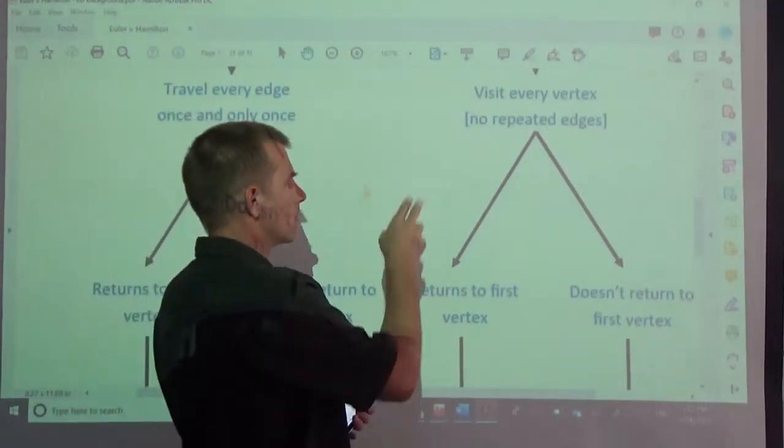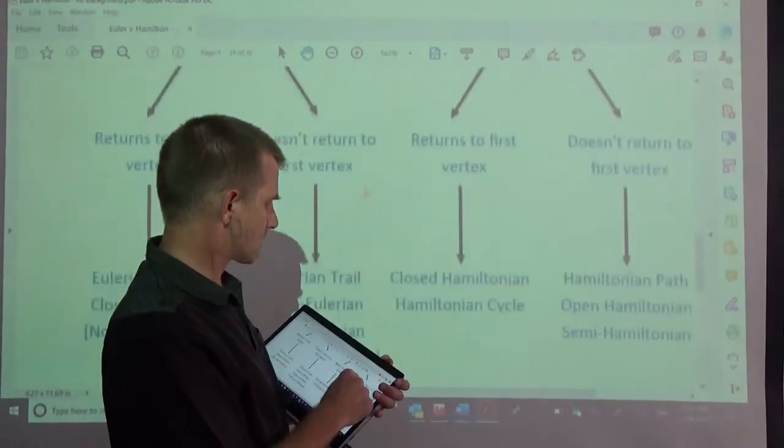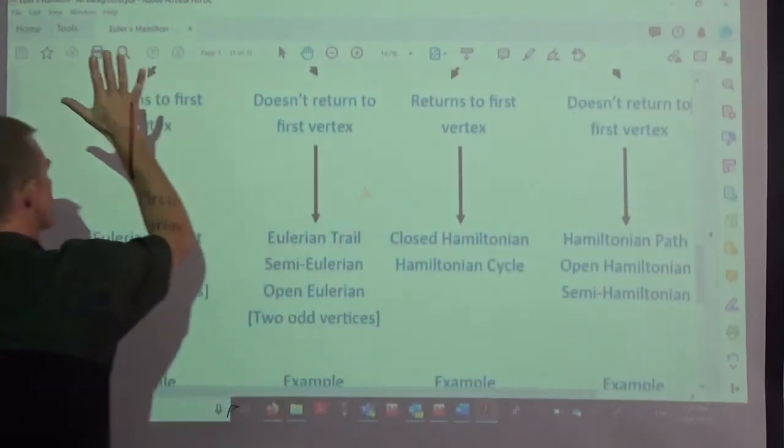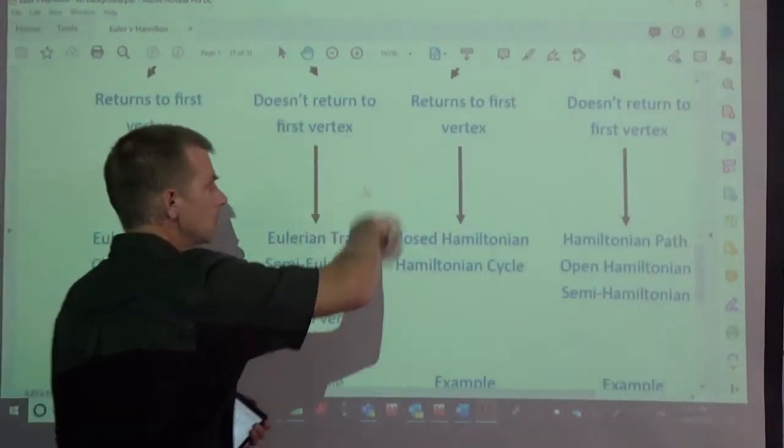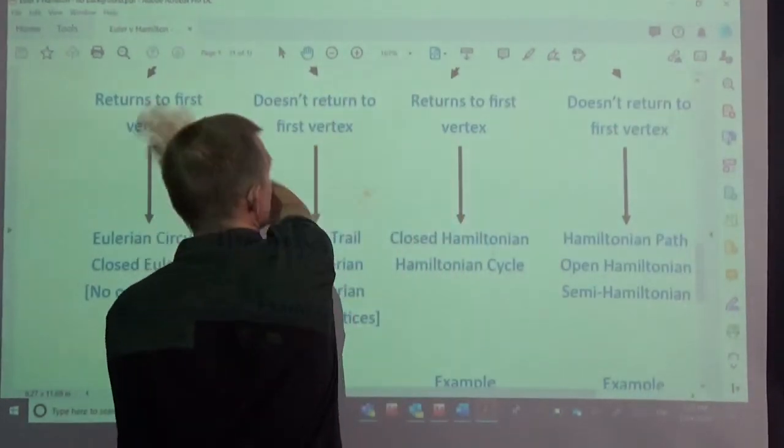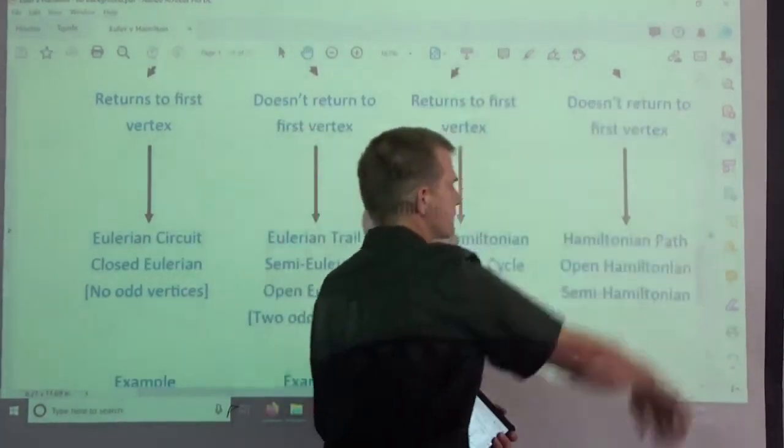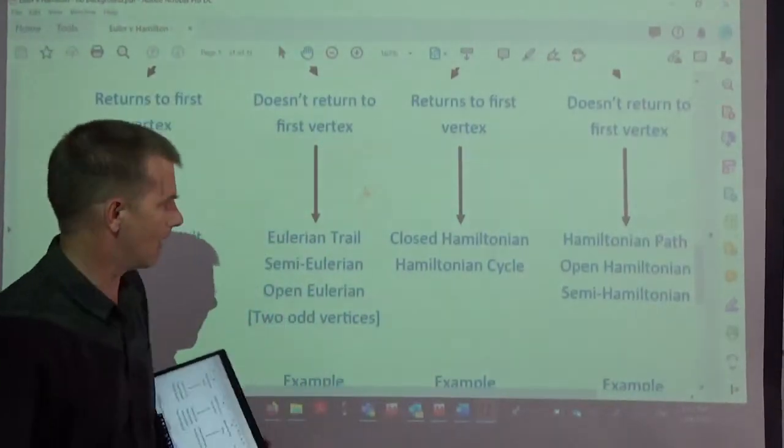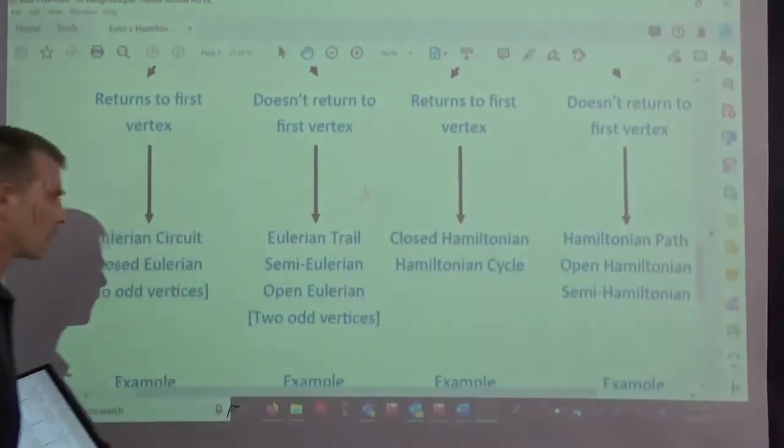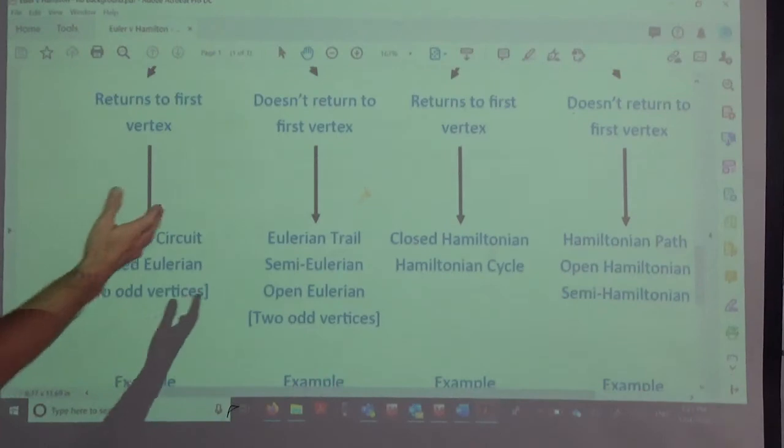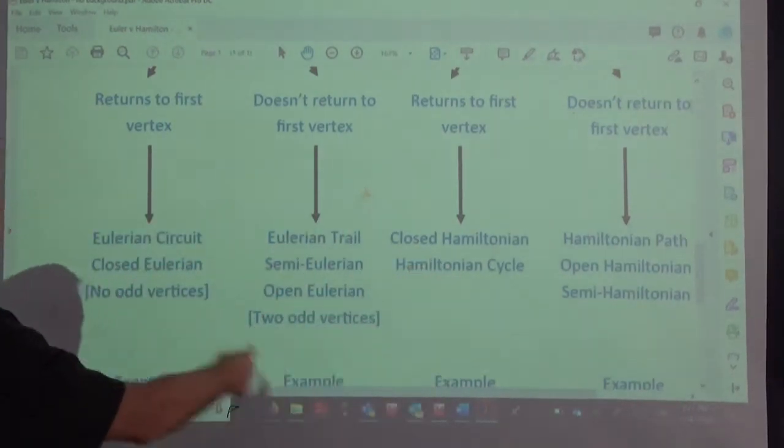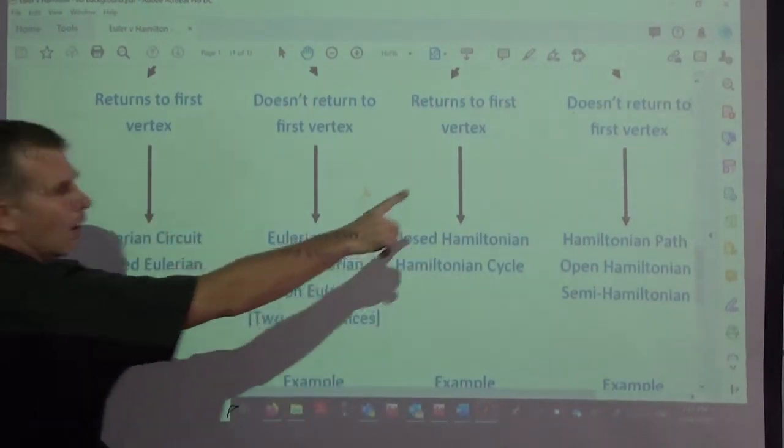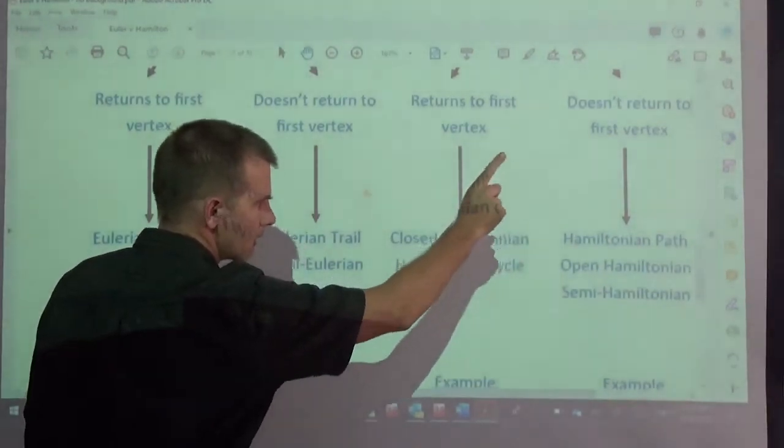Do we visit every vertex? Now key: no repeated edges. You cannot repeat an edge when you're doing this. You can't repeat an edge. Similarly, just like over here, returns to first vertex, doesn't return to first vertex. Same idea, some similar words. Closed Hamiltonian, Hamiltonian cycle. Open Hamiltonian path, semi-Hamiltonian.